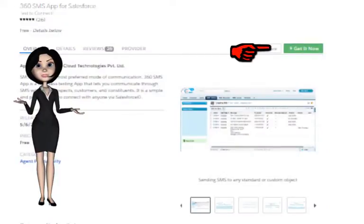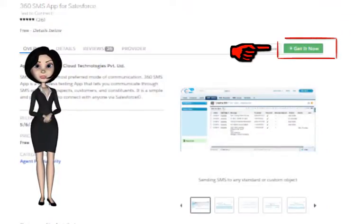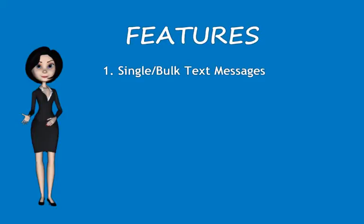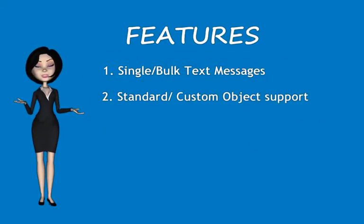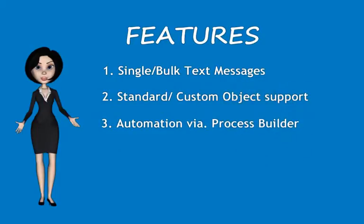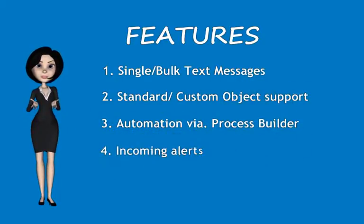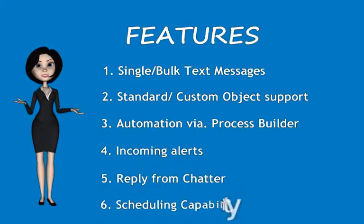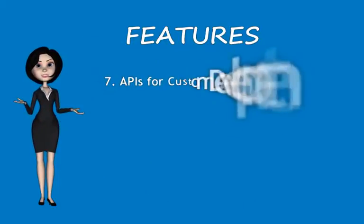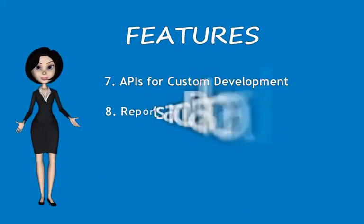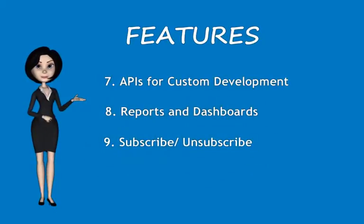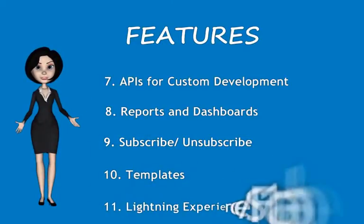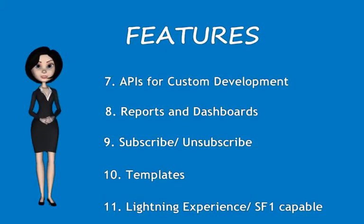You can easily install the app into your Salesforce CRM from AppExchange. Some of the main features of our app are: sending single as well as bulk text messages; text either from any standard or custom object; do it manually or automate it via process builder; show incoming alerts in an attractive sidebar; reply directly from chatter; schedule text messages for sending them later; APIs available for custom development; tracking via reports and dashboards; give your clients the power to subscribe or unsubscribe; create your own templates; and use all the features in Salesforce Lightning Experience as well as in Salesforce One Mobile App.